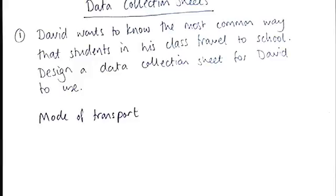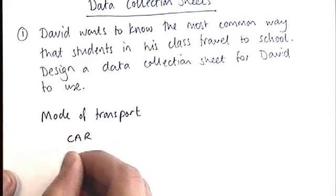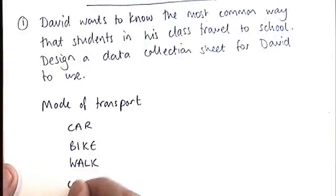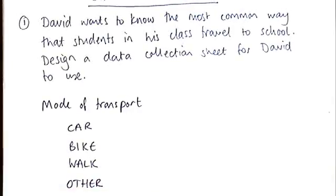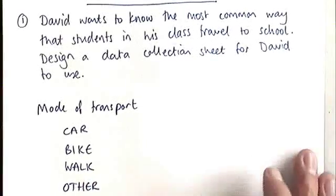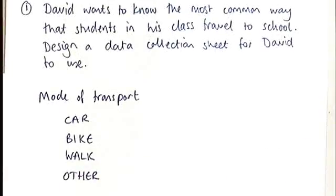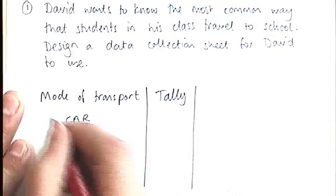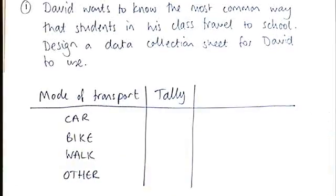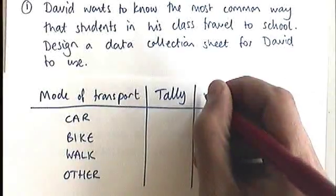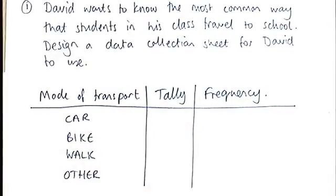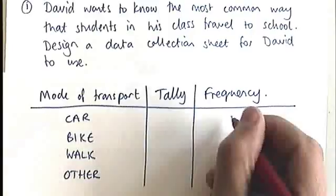What you need to write down is some different modes of transport: car, bike, walk, and other. I always want to include an 'other' category in case somebody arrives via helicopter or swims into school. You need a tally column every time for a tally chart — if you're collecting one piece of data from each person, you want a tally chart. Then you need a frequency column. People often forget this one, but it's a really good idea to include frequency so you can total up the tallies afterwards.